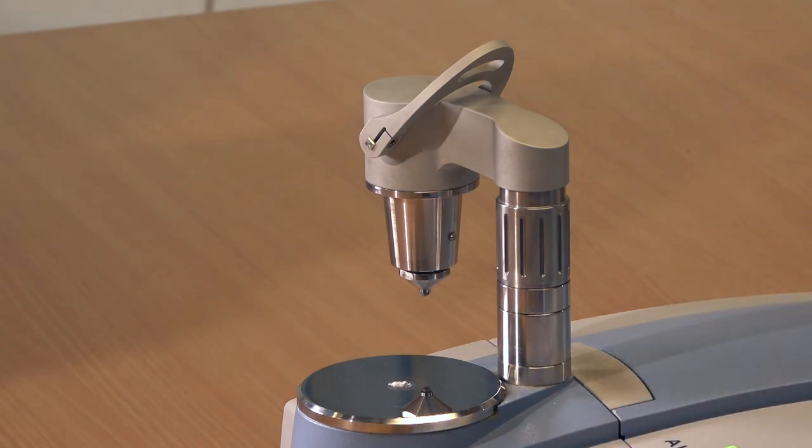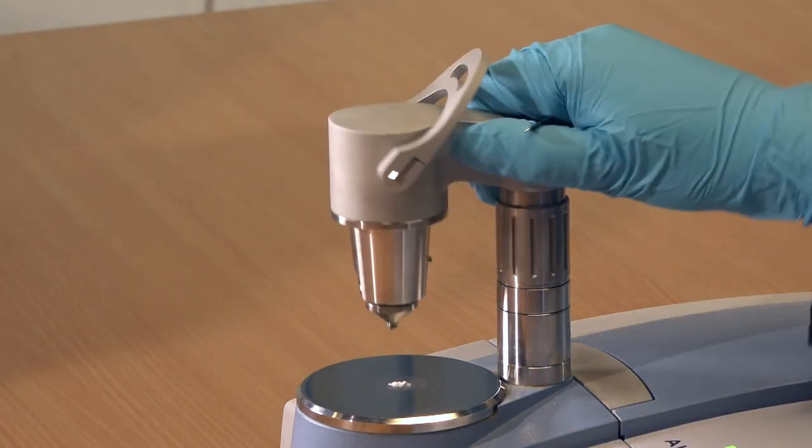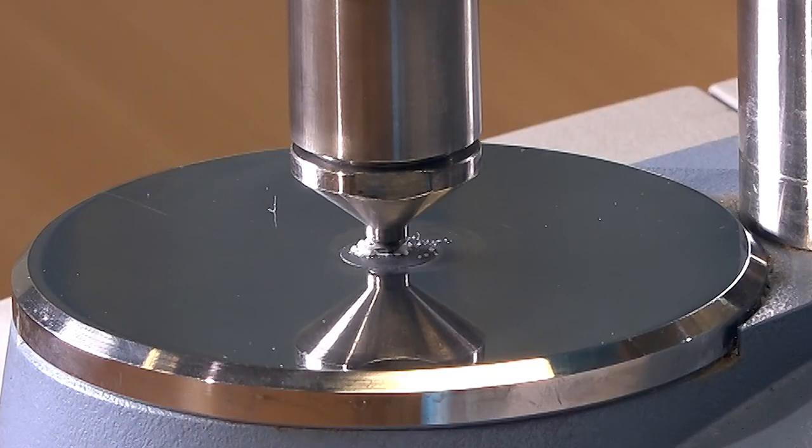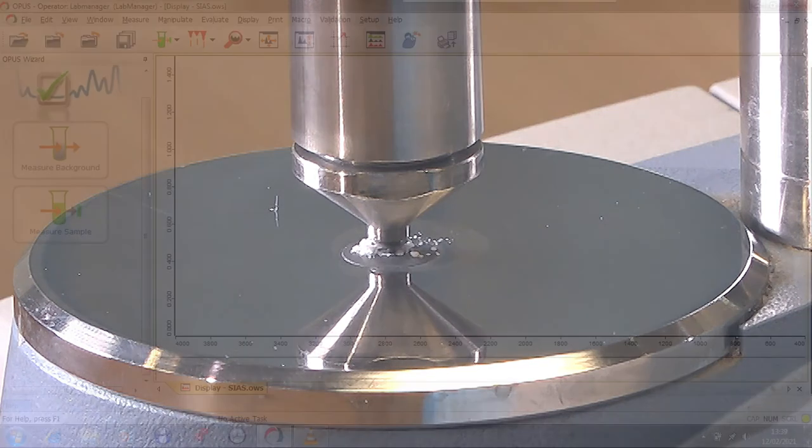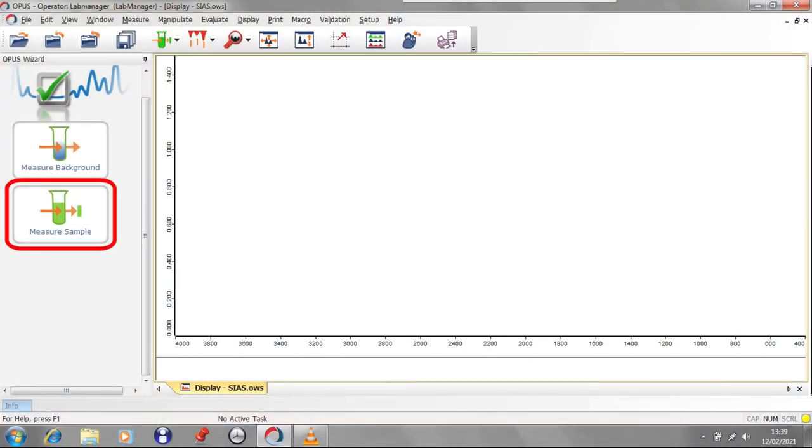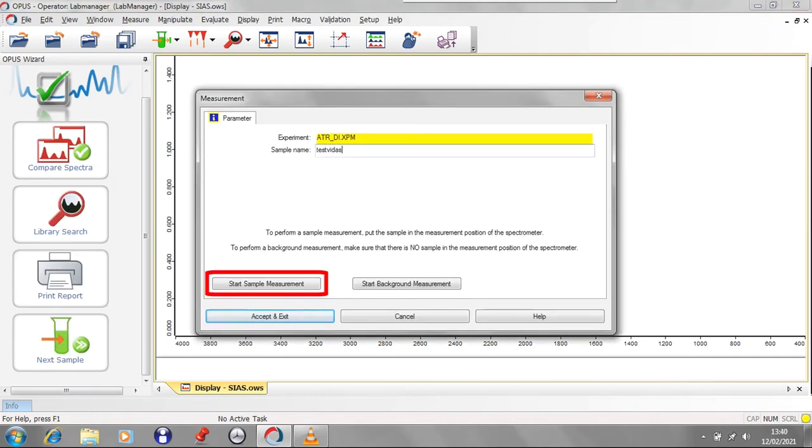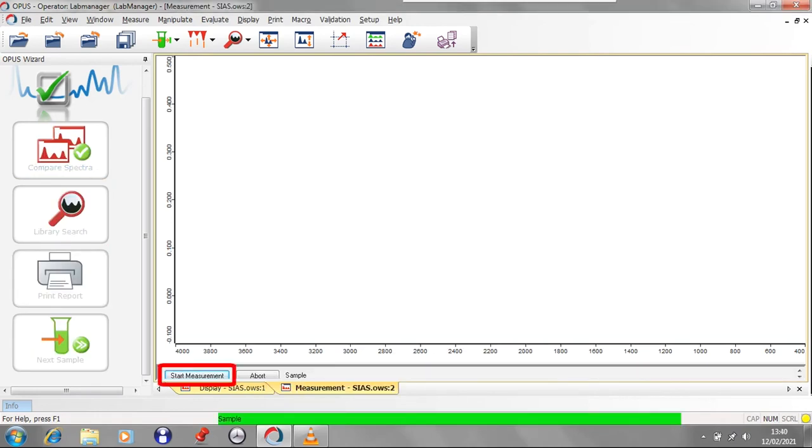Swivel the arm back over the window and push the handle forwards and down until it clicks into place. Failure to click will result in poor spectra due to poor contact between the solid sample and the diamond underneath. Click Measure Sample and, as before, change the sample name, then press Start Sample Measurement and Start Measurement. The spectrum will now be recorded.